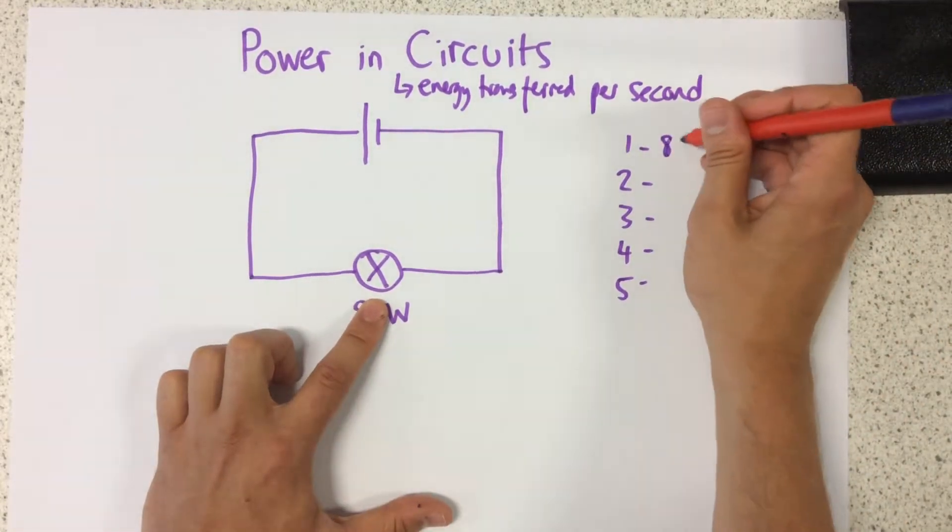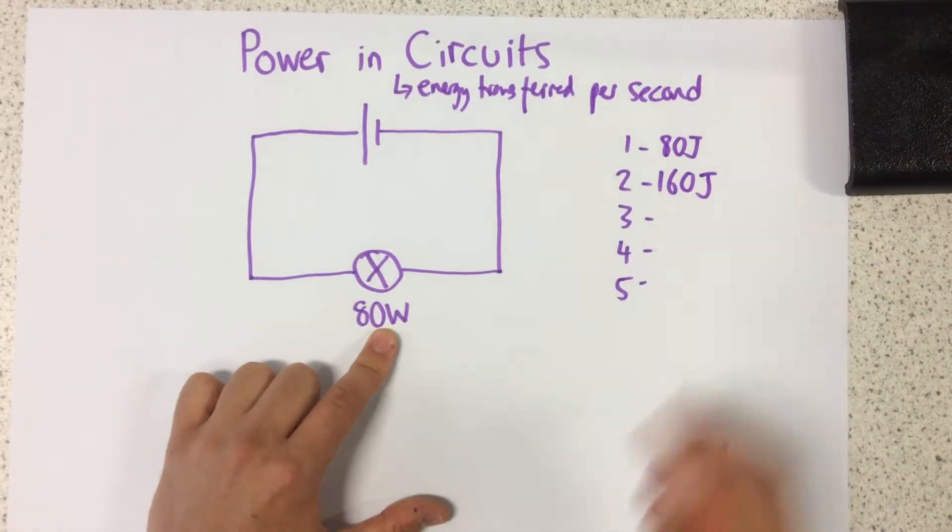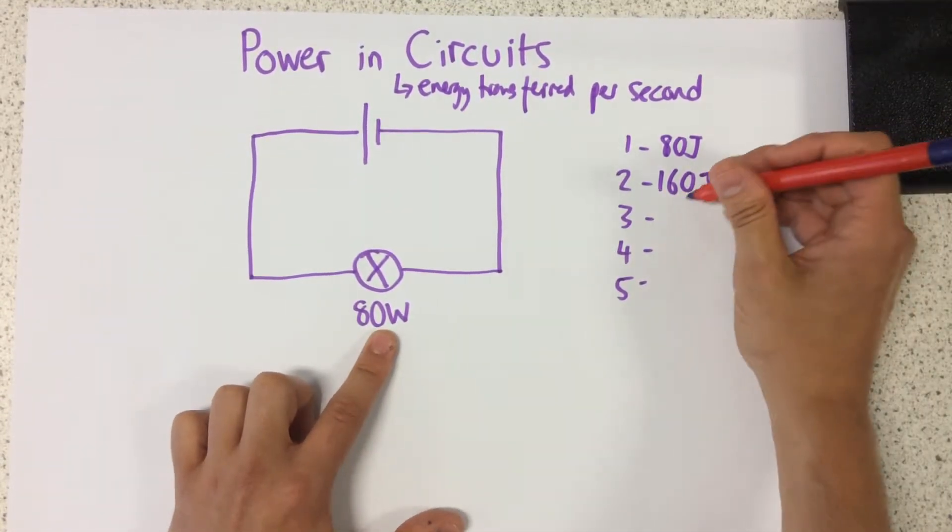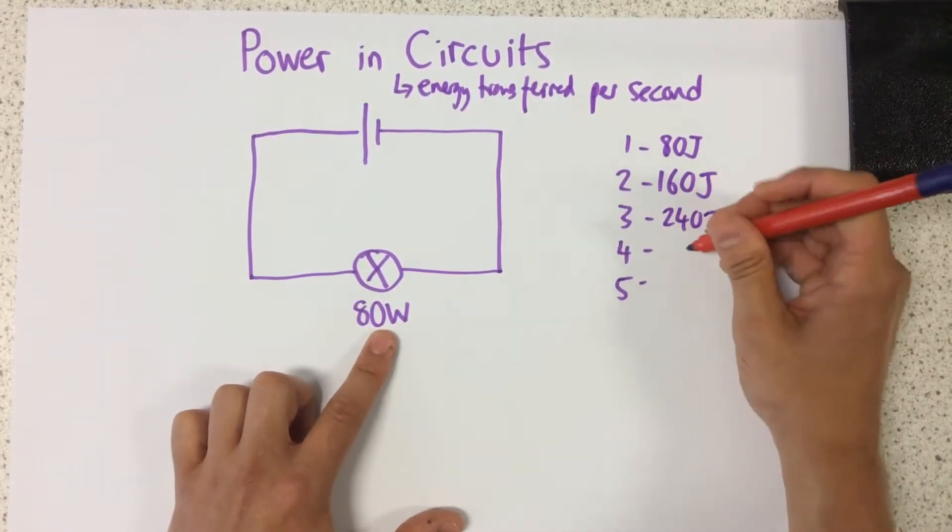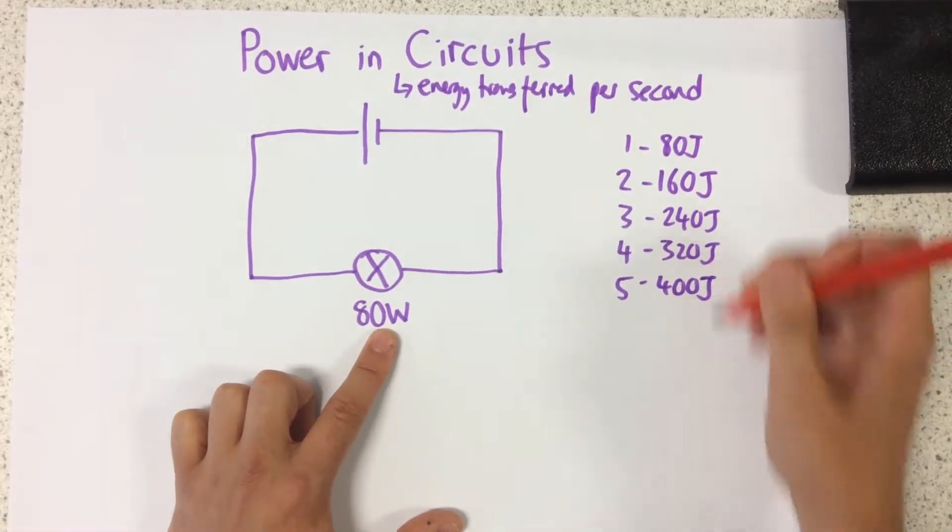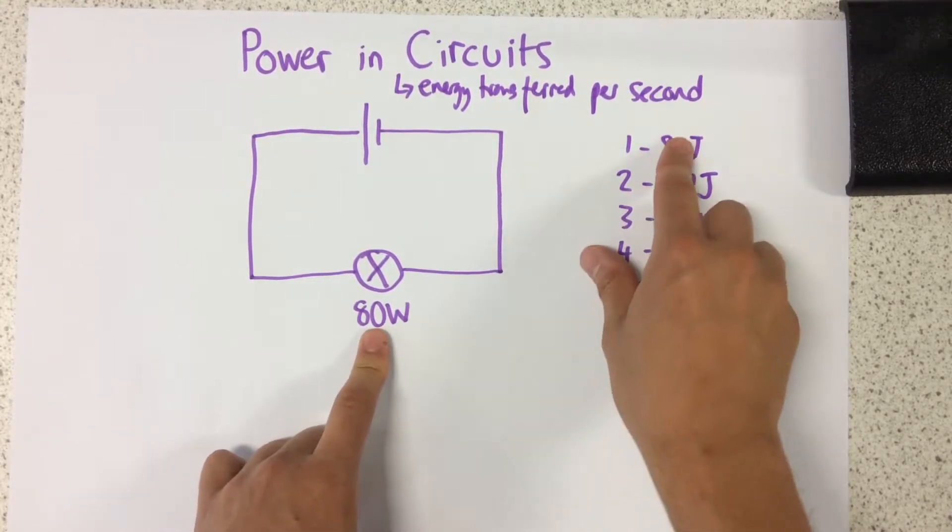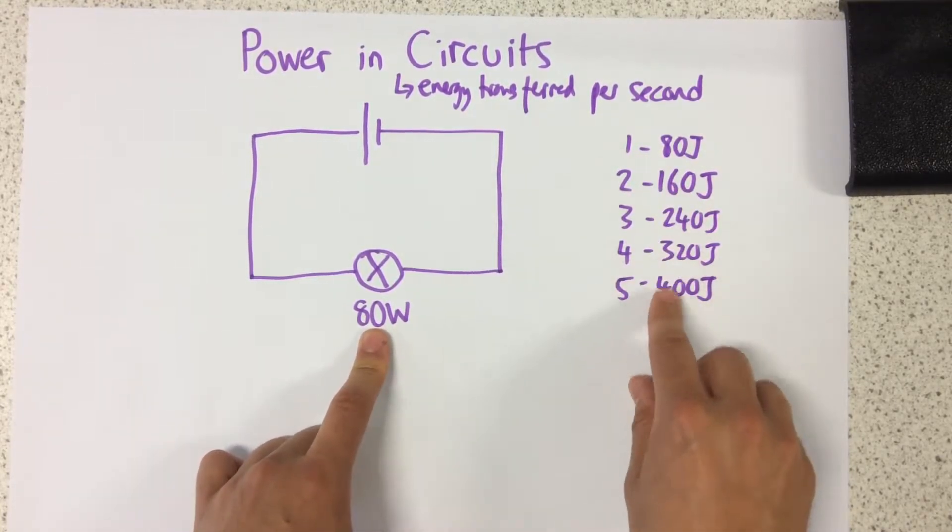So after one second, it releases 80 joules. After the second second, it would have released 160 joules. Then 240 joules. After four seconds, 320. And after five seconds, 400 joules. Because every single second, that's how much energy is transferring. 80 joules every single second.